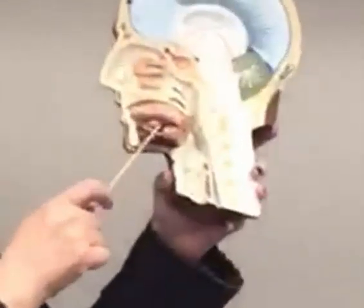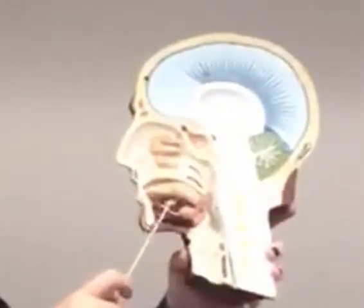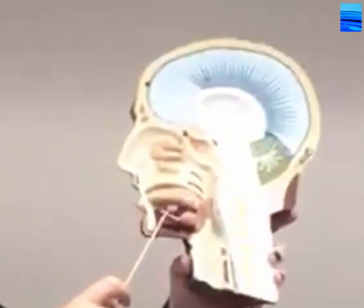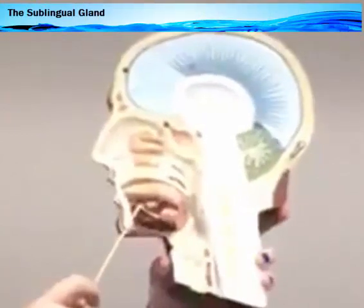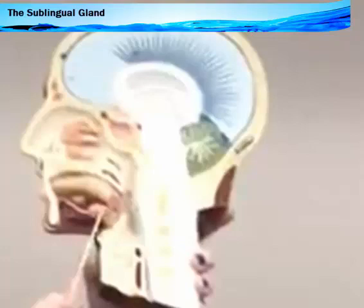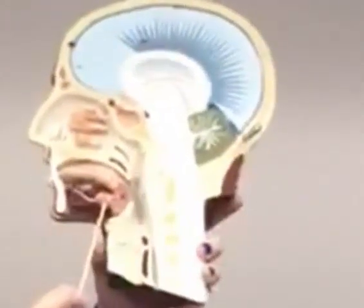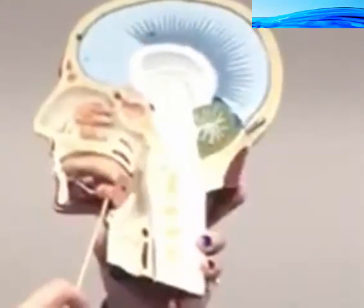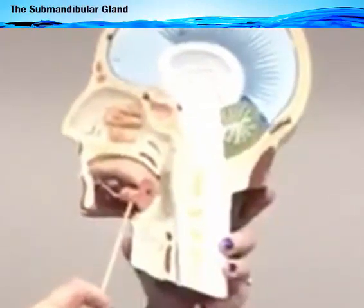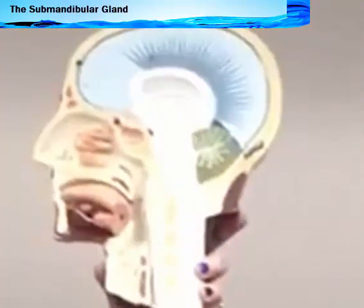You have one salivary gland that sits anteriorly, just below the tongue — that is your sublingual salivary gland. A little bit lower and a little bit more posterior, you're going to get the submandibular gland. All three of those are salivary glands.